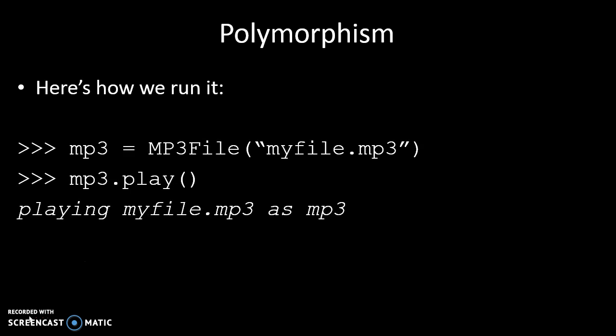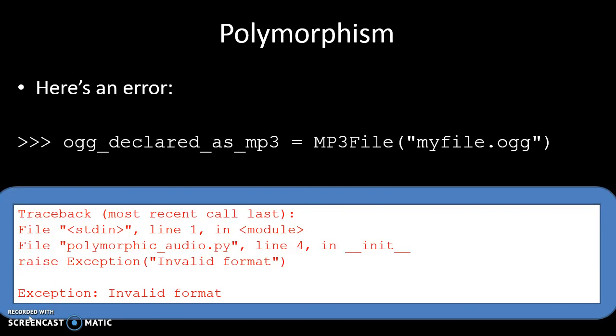So if we declare an instance of MP3File with filename myfile.mp3 and call .play(), it says it's playing that file as an MP3 — which is correct. If we declare an instance of WAVFile and play it, it says it's playing as a WAV. But if we try to declare an OGG file using the MP3File class, the extension won't match .ogg, so it will bomb out — which is perfect. Polymorphism works when the right parameters are passed, but when you pass in something it doesn't recognize, it won't work.